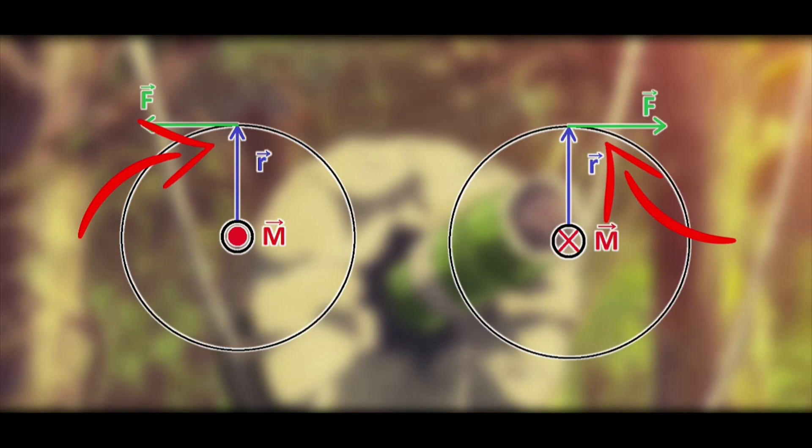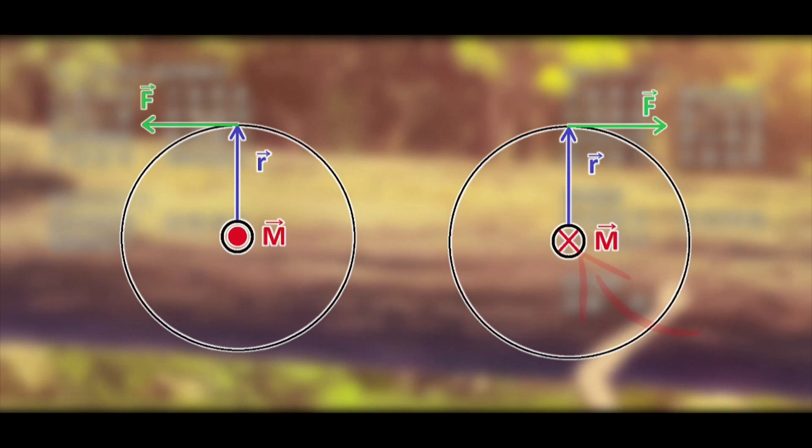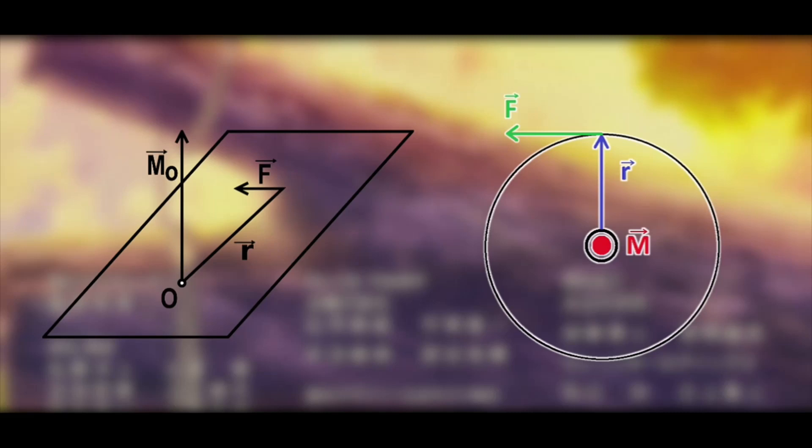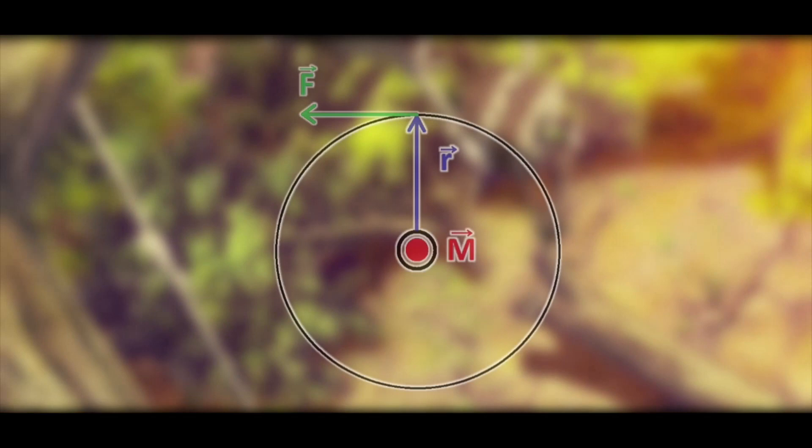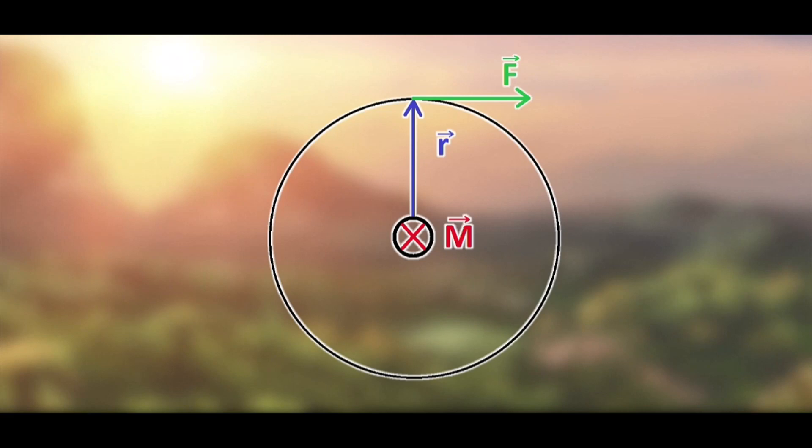You may wonder what's the X or dot here. The result of cross product is also a vector but in third dimension, so to denote the direction of this vector, we use these signs. The dot means that the vector is pointing in our direction, but the cross tells us the vector is aimed at the opposite one.